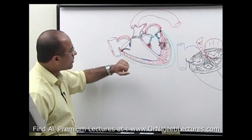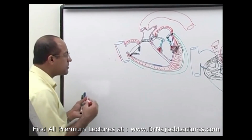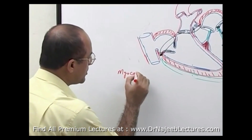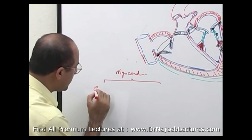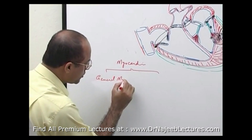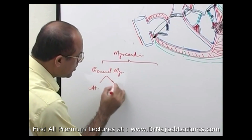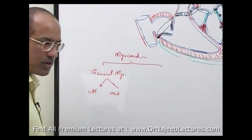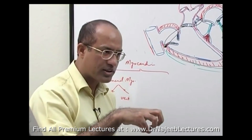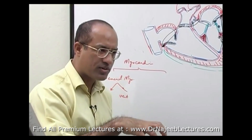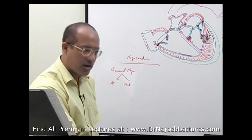What we are talking about is myocardium. Generally, all myocardium is classified as general myocardium, which is mostly atrial and ventricular myocardium, concerned with the contractility function. Most of the atrial and ventricular myocardium has the main function of contraction, so that blood from the atria goes to the ventricles, and ventricular contractility pumps blood to the main outlet arteries.